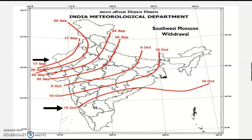The monsoon starts withdrawing from northwest India. Earlier the withdrawal date was 1st September; now it has been revised to 17th September. Slowly it comes down and finally exits the country by 15th October. Starting from 17th September, it exits the country by 15th October. This is the normal date of onset and withdrawal.